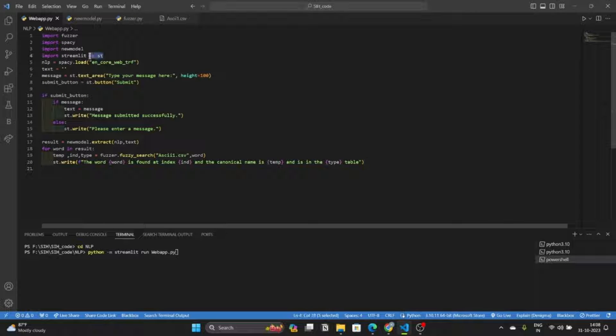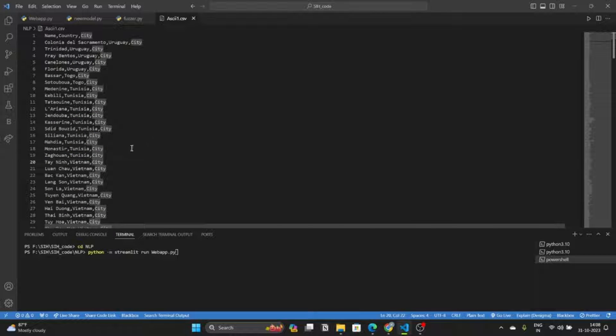This code statement is used to host simple web interface. The given input text is tokenized and stored in the result variable. It is iterated and searched in this dataset. It compares the data from this dataset.